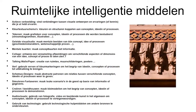Ruimtelijke intelligentie, hoe kun je daarmee werken? Om ruimtelijke intelligentie te stimuleren, kunnen we een heleboel bronnen gebruiken. Om er een paar te noemen: actieve verbeelding, verbanden leggen tussen visuele ontwerpen en ervaringen, kleurstructuren of schema's, kleuren en structuren koppelen aan concepten, ideeën of processen, tekenen, en grafieken maken voor concepten. Dit zijn allemaal zaken die je kunt gebruiken om ruimtelijke intelligentie te bevorderen.